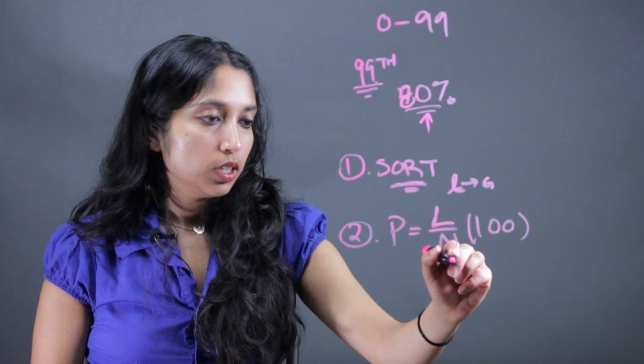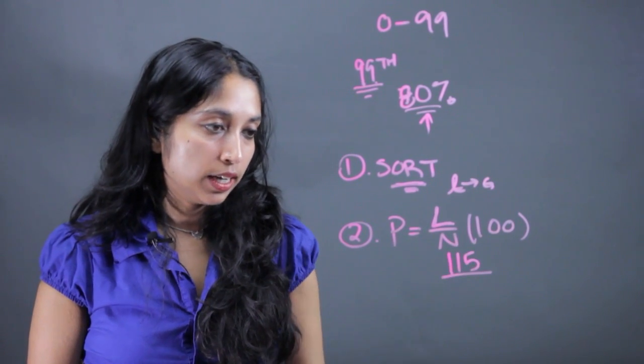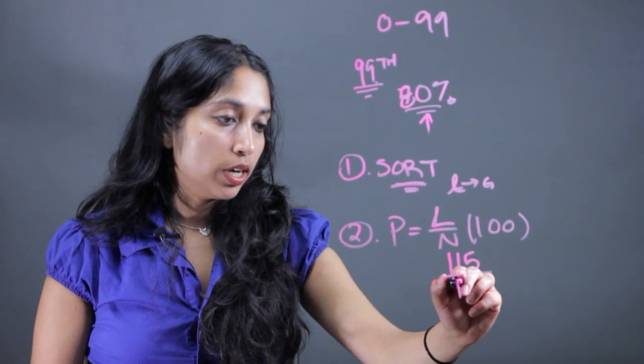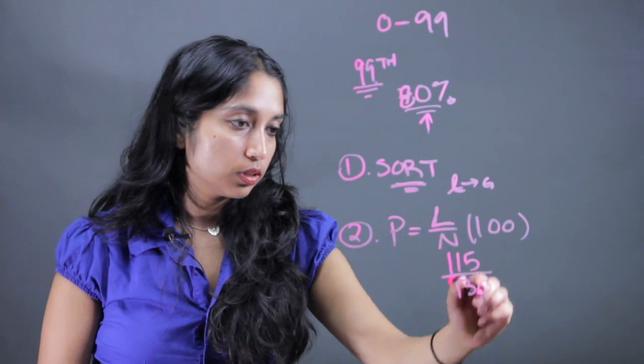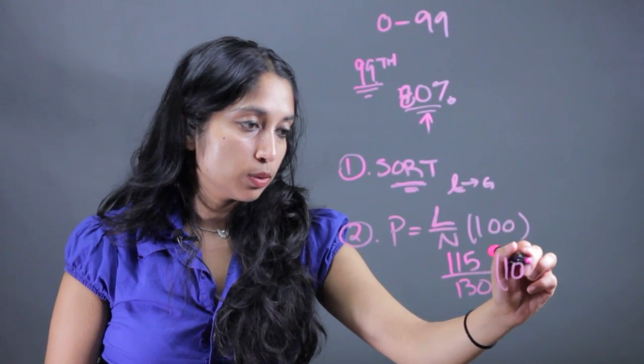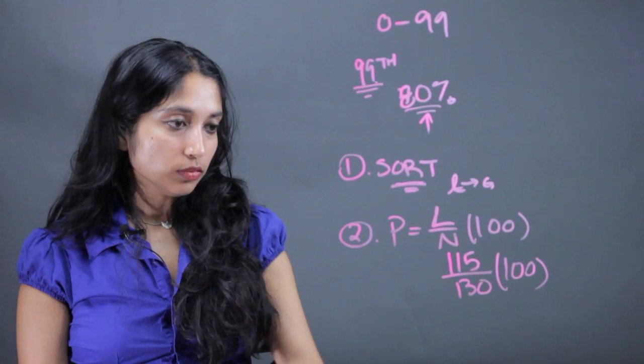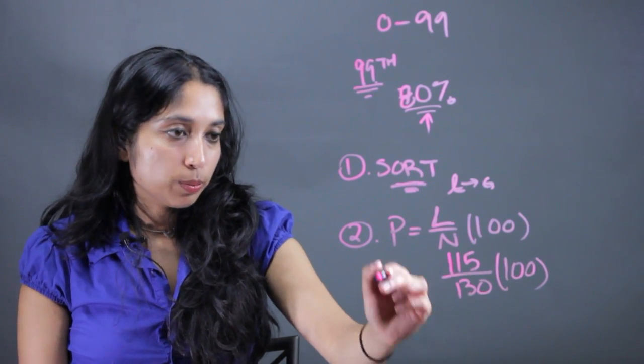So it would be, say there were 115 test scores less than 89, and there were 130 total. So I would just divide these two and multiply that by 100, and that would give me the value of the percentile.